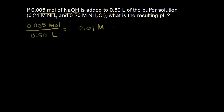So 0.01 M is our concentration of sodium hydroxide. Since sodium hydroxide is a strong base, that's also our concentration of hydroxide ions in solution — 0.01 M. We're adding a base, so think about what that's going to react with in our buffer solution. Our buffer solution has NH3 and NH4+, and the base is going to react with the acid — so hydroxide is going to react with NH4+.